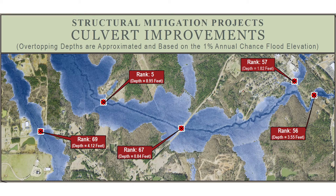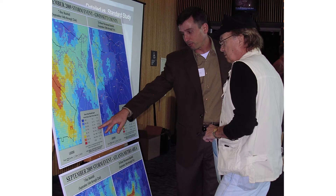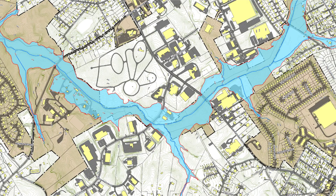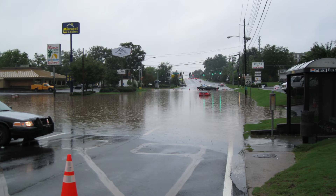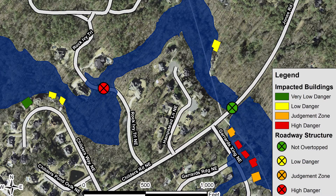By combining these products with local knowledge, local data sets, and resources, community officials are not only able to better understand their risks, but also protect their citizens from future flood losses. And that's a short explanation of FEMA's Risk Map products.